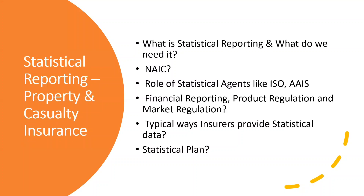The fourth point: what is the role of statistical agents like ISO, AAIS, etc.? The role of the Department of Insurance is to collect data from each insurance company to make sure everything is working as per the rules and regulations. But there are more than 2,000 insurance companies, and every insurance company will have its own format in terms of data management. It's not practically possible for the Department of Insurance to directly work with each and every company. So they appoint statistical agents like ISO and AAIS, who work with individual insurance companies, collect the data, and format it in a way the Department of Insurance can review. That is why we need these intermediary agents to help the Department of Insurance.